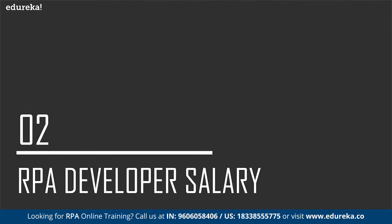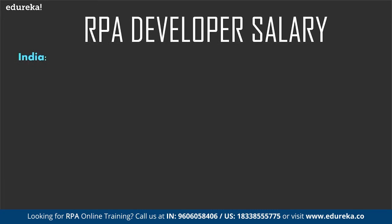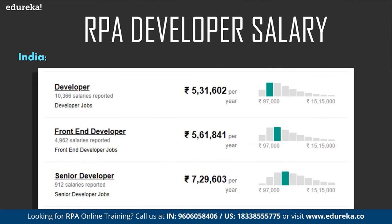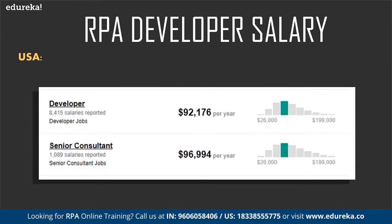Moving on to the RPA developer salary — according to Indeed.com, the salary is estimated from around 30,000 users, employees, and past and present job advertisements over the past 36 months. The average salary of an RPA developer ranges from around 5,31,000 per year for a developer to 7,29,000 per year for a senior developer. Looking at the United States, according to Indeed.com again, estimated from around 18,000 users and job advertisements, the average salary of an RPA developer ranges from around $92,000 per year for a developer to $96,000 per year for a senior consultant.